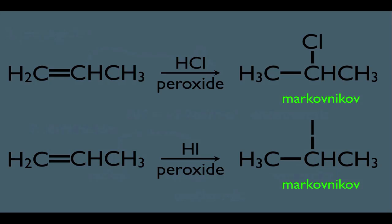You might wonder, if the radical mechanism doesn't work with HCl or HI, why do we get a Markovnikov product? That's because the reaction simply follows the mechanism we learned for HX addition to an alkene, which produces a Markovnikov product through a carbocation intermediate — completely different from a radical mechanism.